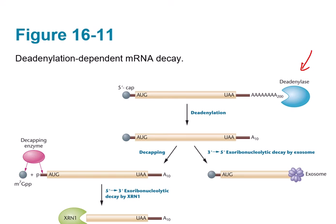Another enzyme gets involved after the number of polyA tail adenine nucleotides is reduced below 30 — that is called the exosome complex. The exosome complex does a very similar job: it also removes the polyA tail and continues the process that was stopped by deadenylase, breaking down going from 3' towards 5'. The degradation process goes in the opposite direction of synthesis.